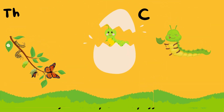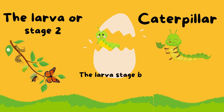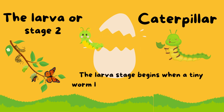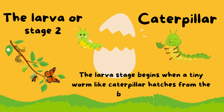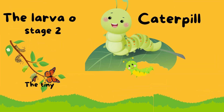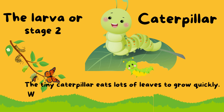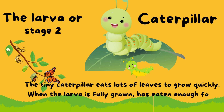Stage 2: the larva. The larva stage begins when a tiny worm-like caterpillar hatches from the butterfly egg. The tiny caterpillar eats lots of leaves to grow quickly. When the larva is fully grown, it has eaten enough food to transform once again.